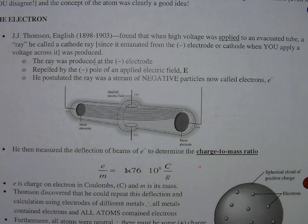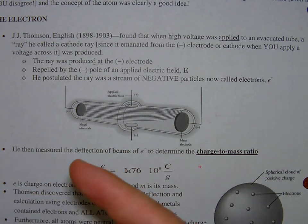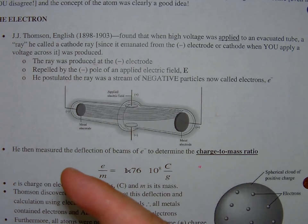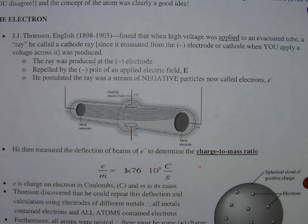When he put this high voltage through an evacuated tube, he noticed that a cathode ray - he called it that because it was a beam that emerged from the cathode, the negative electrode, when he applied voltage to it.